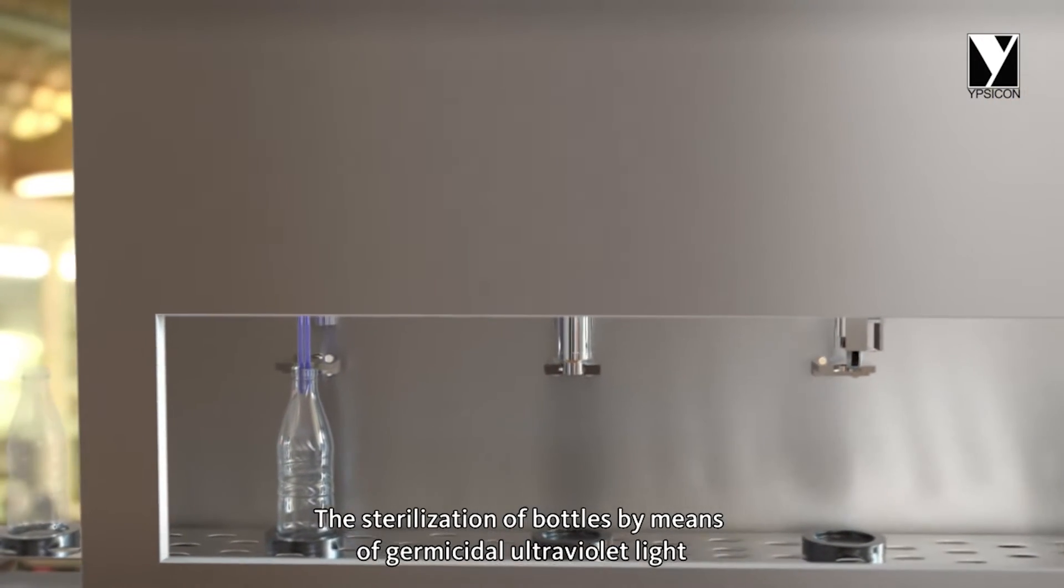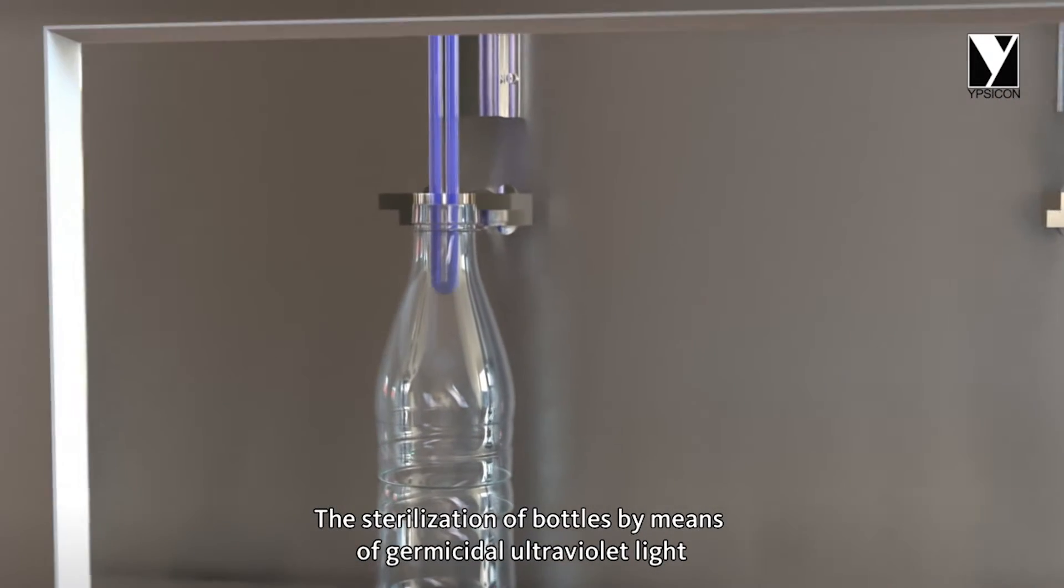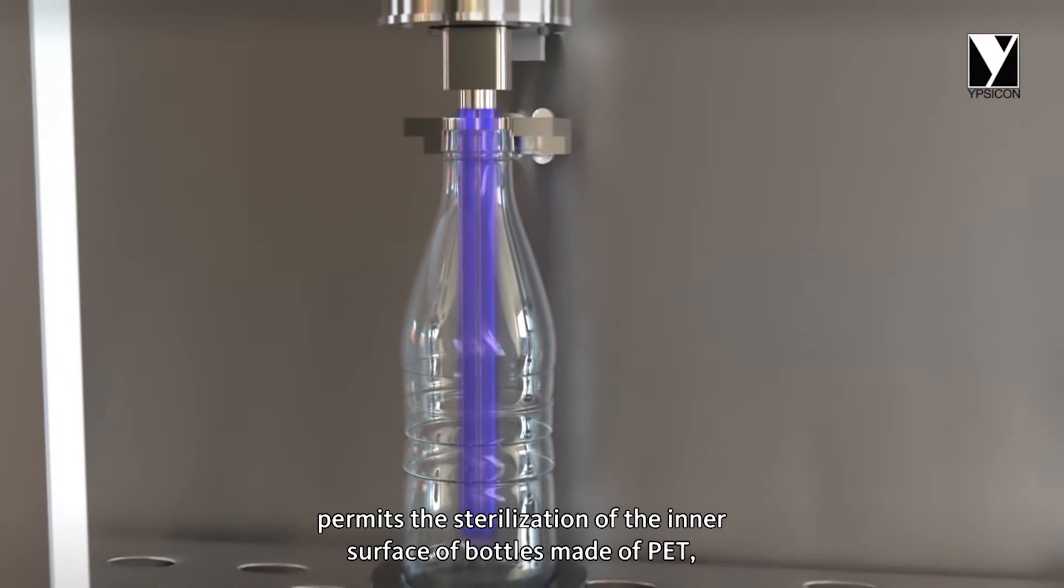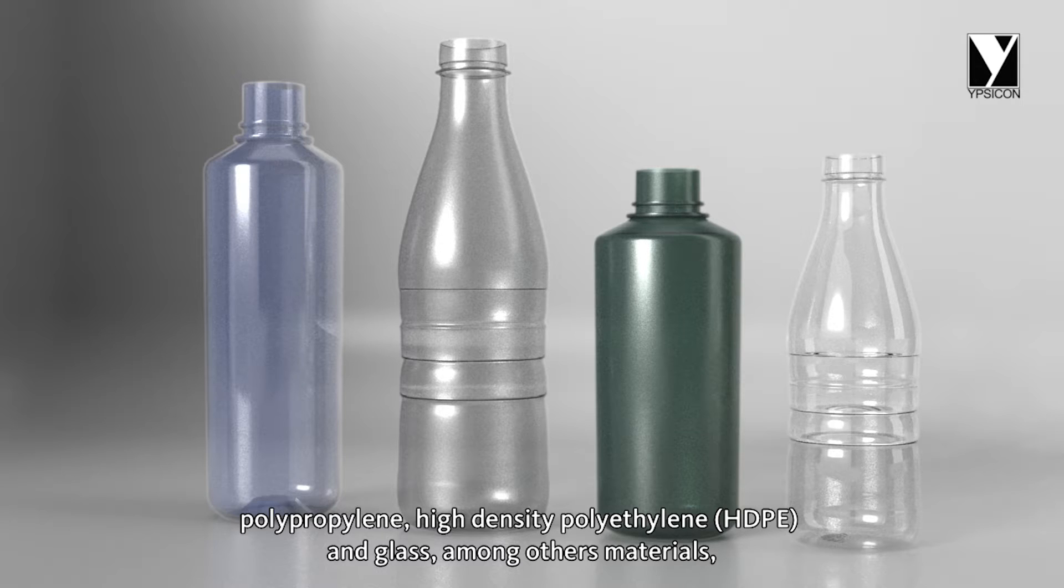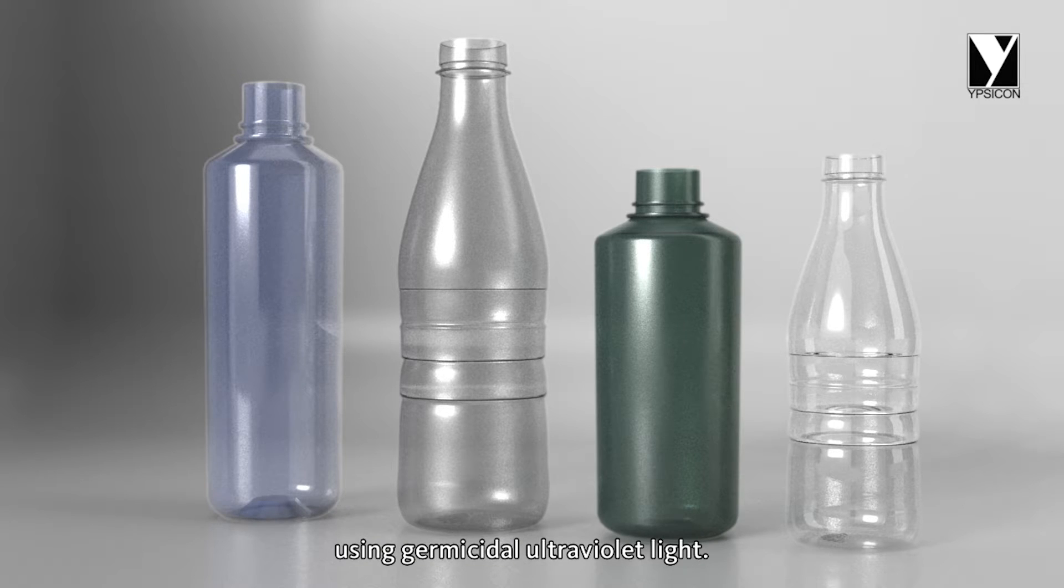The sterilization of bottles by means of germicidal ultraviolet light permits the sterilization of the inner surface of bottles made of PET, polypropylene, high density polyethylene, and glass, among other materials, using germicidal ultraviolet light.